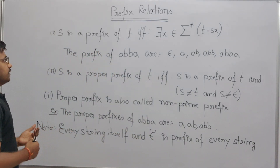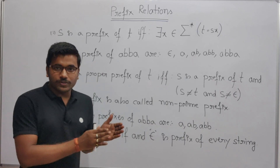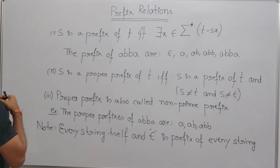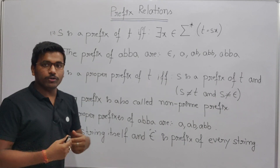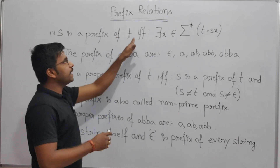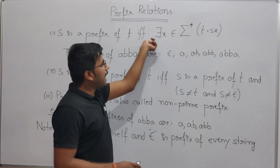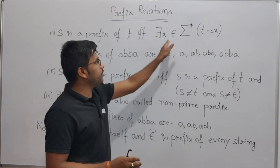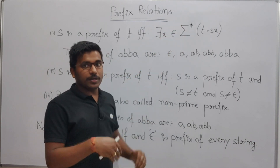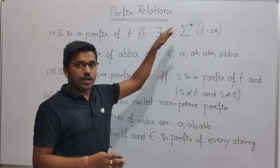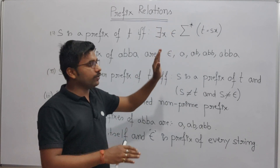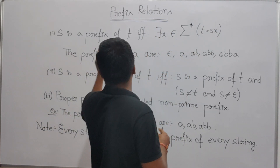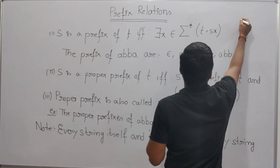So what is a prefix relation? From the name itself we can tell — a string s is a prefix of t if and only if there exists some x belonging to sigma star (meaning any combination over the defined sigma) such that t equals s concatenated with x.